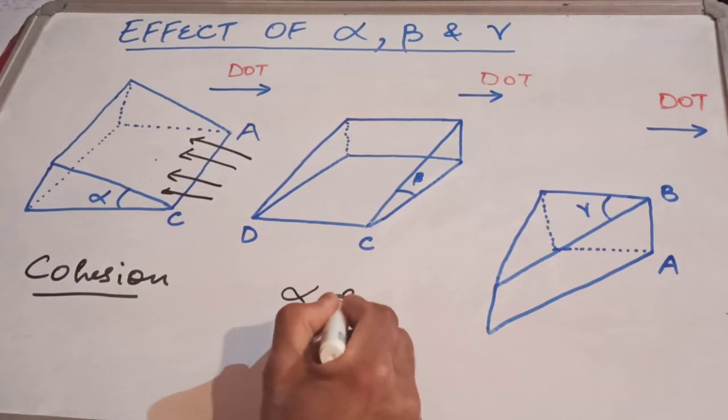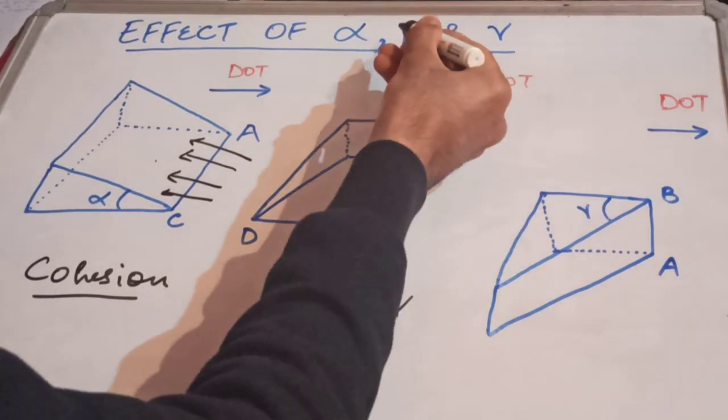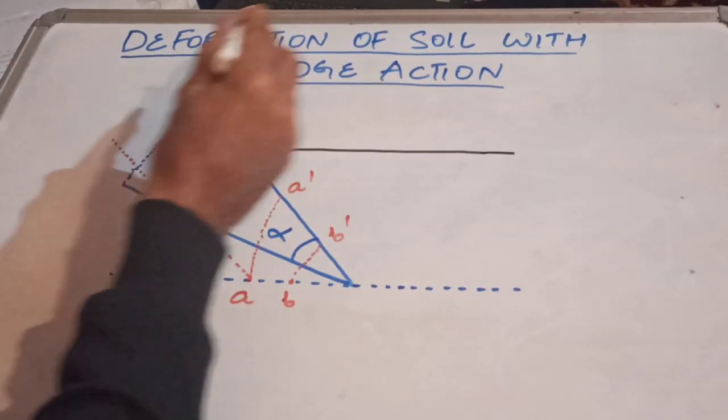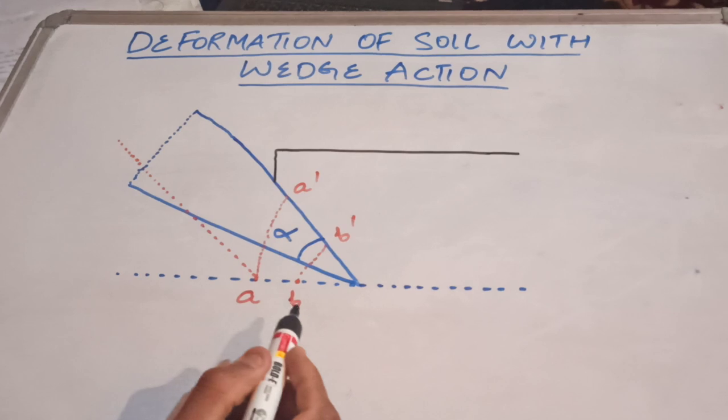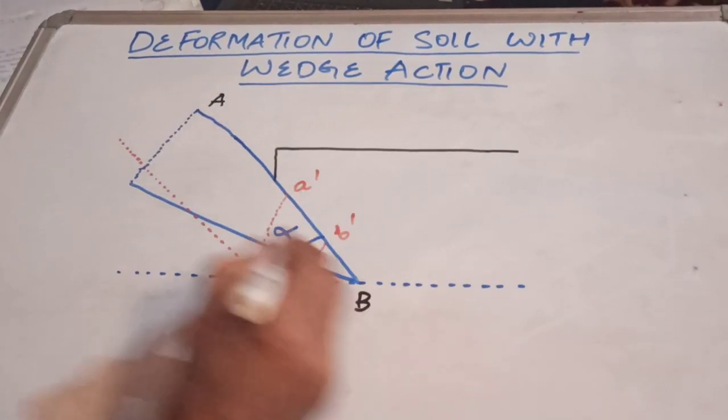The working surface AB is perpendicular to the direction of travel. So gamma is responsible for pushing the soil sidewards. By taking alpha, beta and gamma and the direction of motion, we are getting different interaction of the tillage tool, I mean wedge, with the soil.